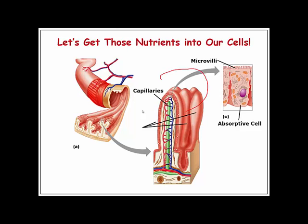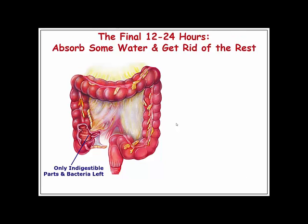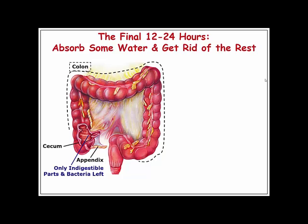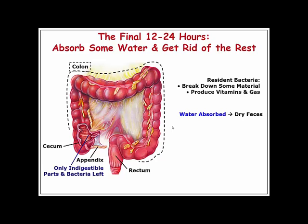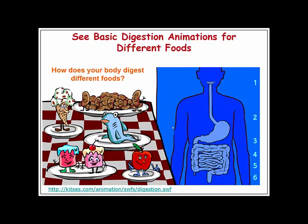Be able to describe how the microvilli work — they increase surface area and food only needs to pass through relatively one to three cell lengths to reach the capillary layer. In the large intestine we remove water. The appendix links the large intestine and the small intestine. Resident bacteria in the gut break down material, produce some vitamins, and produce some gas. Water is absorbed so we don't lose too much, resulting in relatively dry feces.